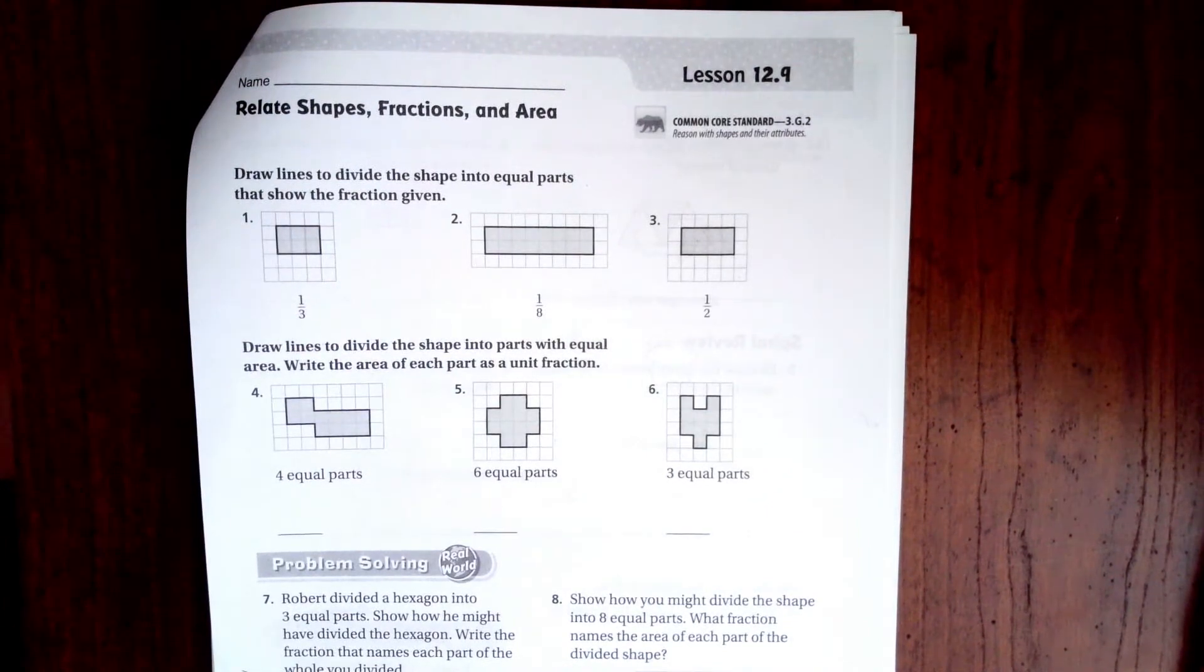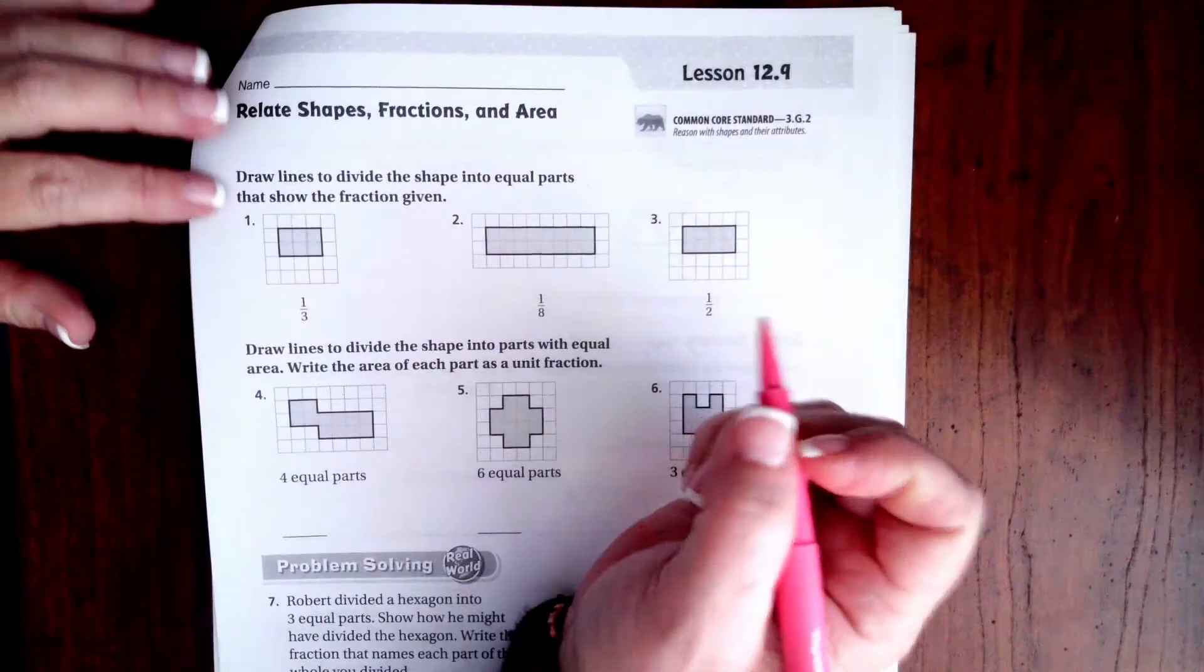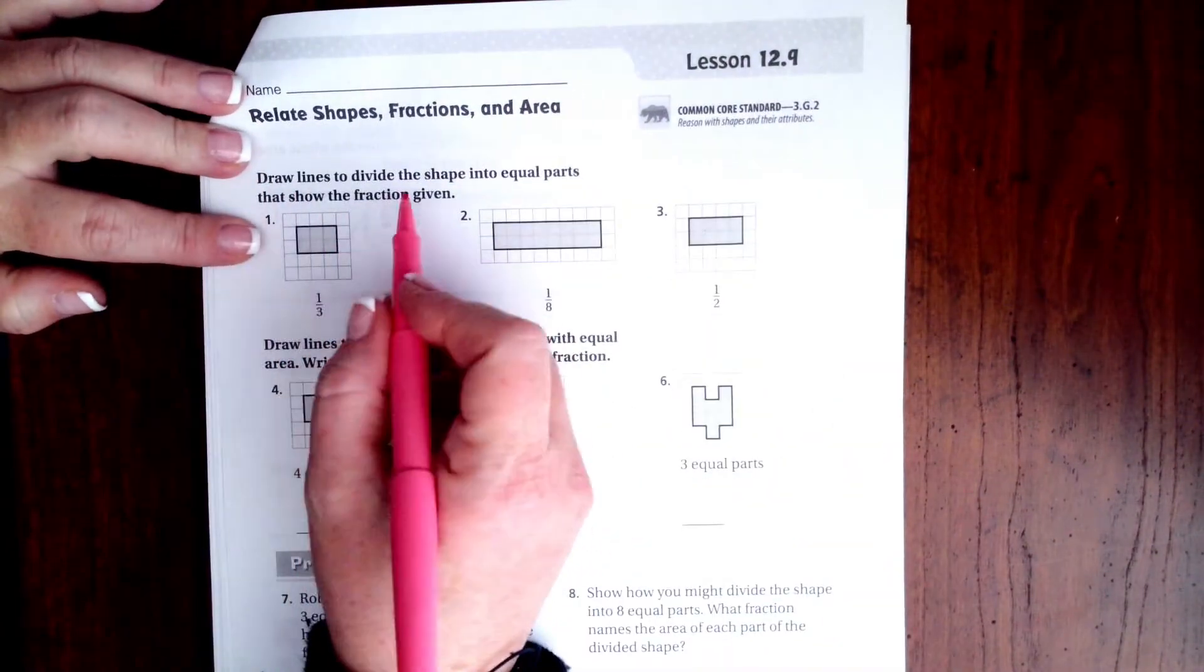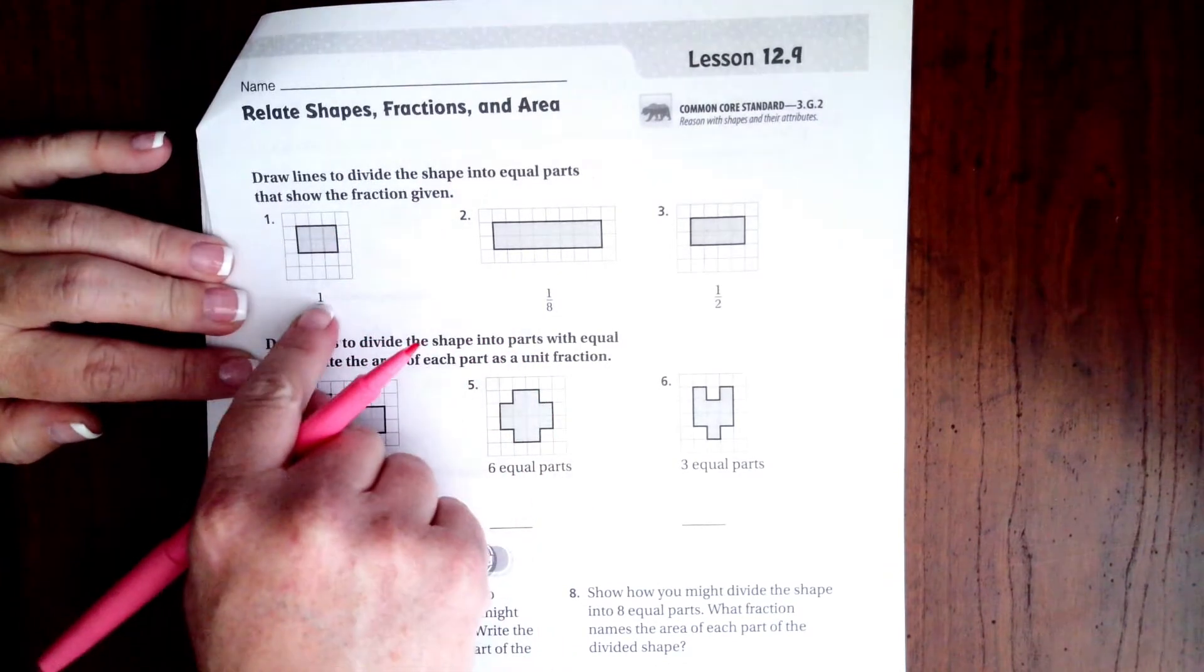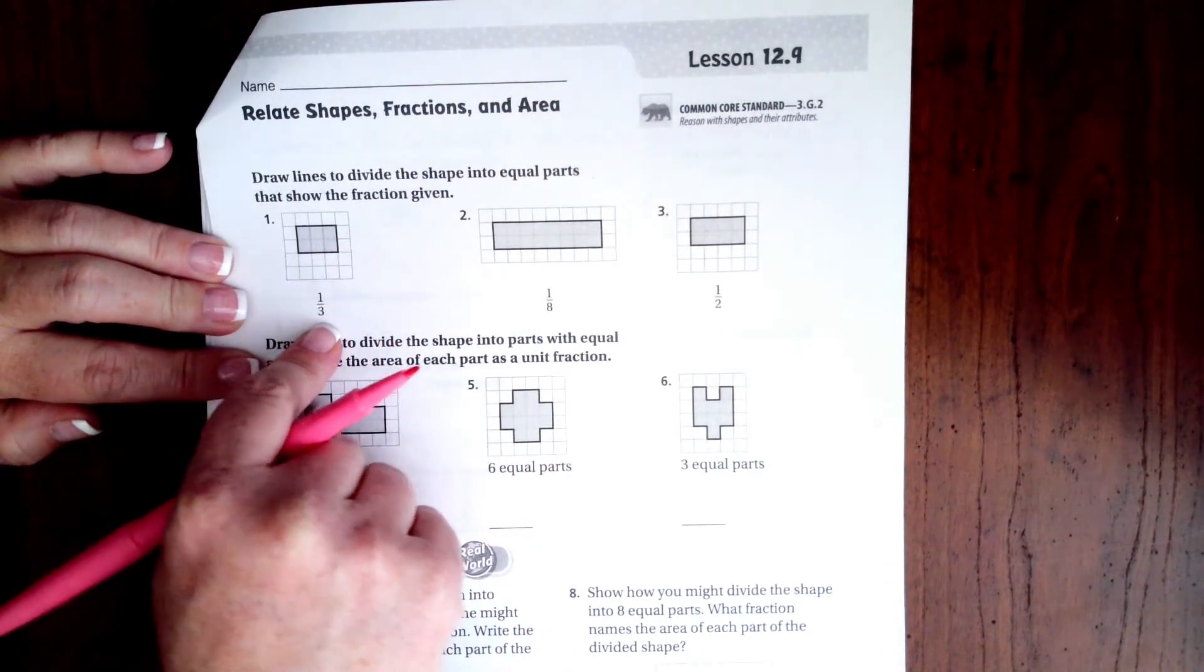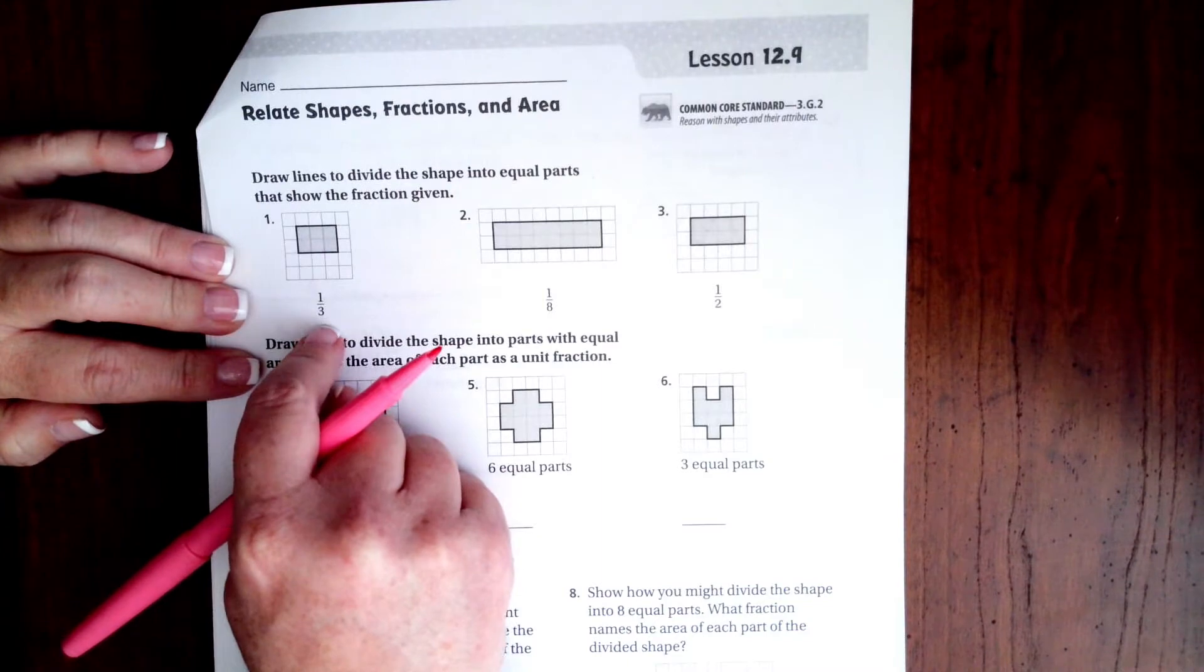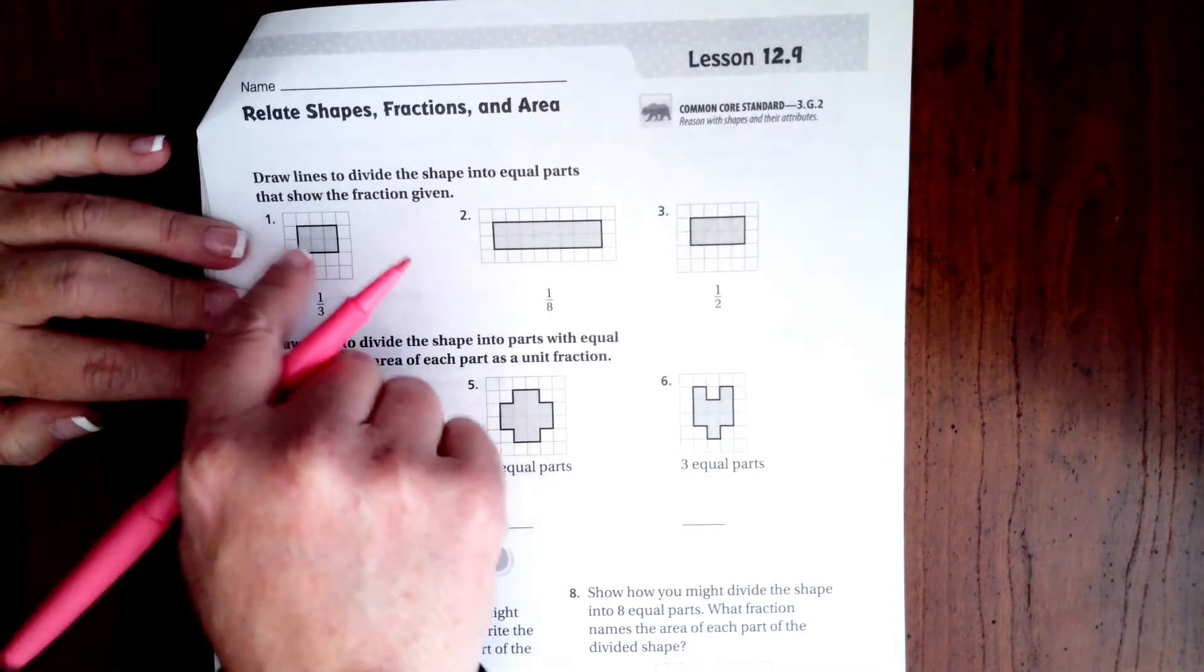Hi guys, welcome to third grade chapter 12 lesson 9, and hopefully your very last math lesson of third grade. So we're going to go ahead and jump right in. It wants us to draw lines to divide the shape into equal parts as shown in the fraction. Now we don't really care what the top number is, we want to divide it into the number that is the bottom. So this one's a three, so I'm going to...